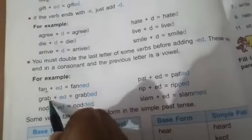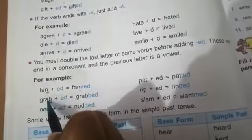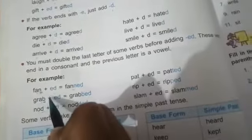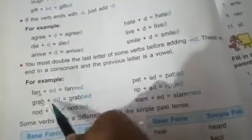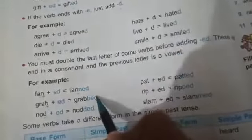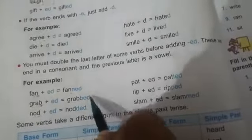Just before b, vowel is there. So after b, again we will double the b. Then we will add ed and it will become grabbed. That is the past form. Just like that.